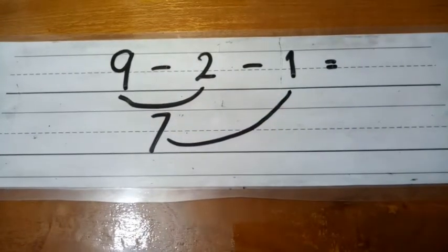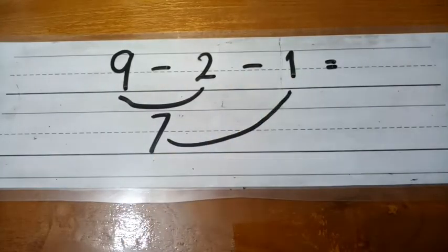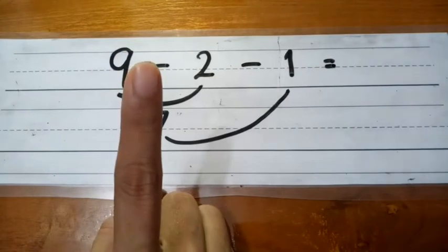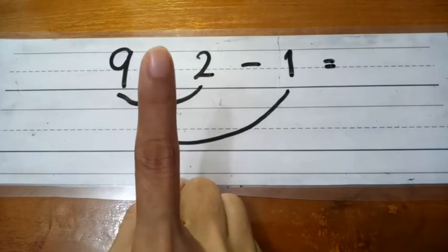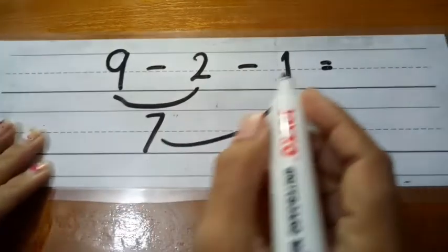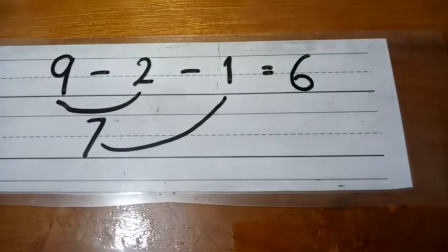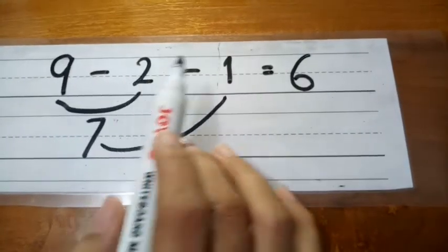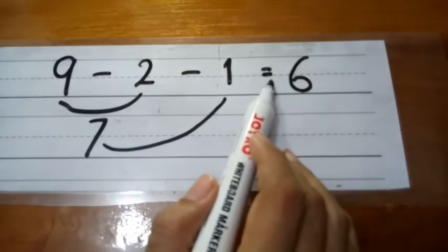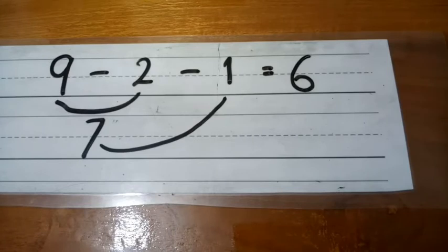Now count seven minus one. Seven is on your mouth and one is on your finger. Before seven is six. So the answer is six. Nine minus two minus one equals six. Take a look at your book again.